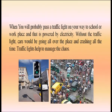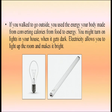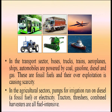When you pass a traffic light on your way to school or the workplace, it is powered by electricity — without traffic lights, cars would be going all over the place and crashing constantly. If you walk outside, you use the energy your body made from converting calories from food. You might turn on lights in your house when it gets dark. In the transport sector, buses, trucks, trains, aeroplanes, ships, and automobiles are powered by coal, gasoline, diesel, and gas — these are fossil fuels, and their over-exploitation is causing scarcity.